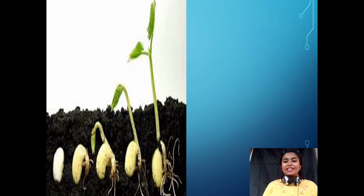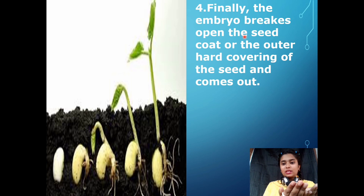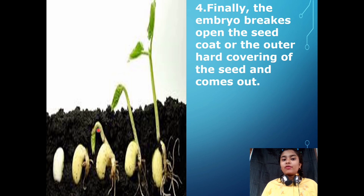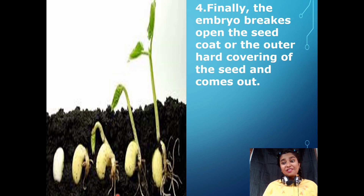In the fourth stage, the embryo breaks open. The shoot — the upper part or stem of the plant — comes out from the embryo. As you can see in the picture, the shoot grows towards the sun and the root also emerges, growing towards the ground.